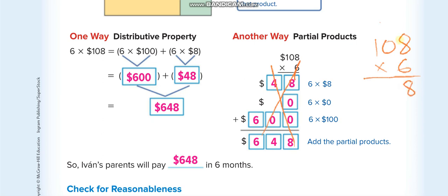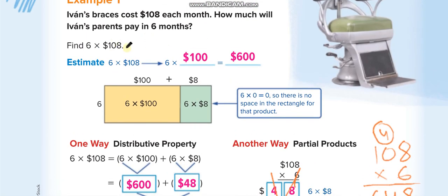6 times 8 is 48, so we write 8 here and 4 above the 0. Now 6 times 0 equals 0 plus 4. And 6 times 1 is 6. That's it. Here they are using the distributive property. It's 108, so they break it into 100 and 8. 6 times 100 is 600, 6 times 8 is 48, so the answer is 600 plus 48, which equals 648.